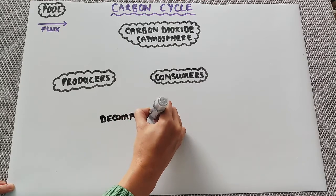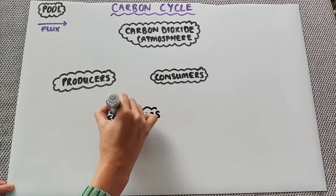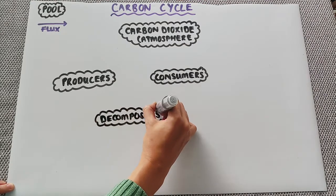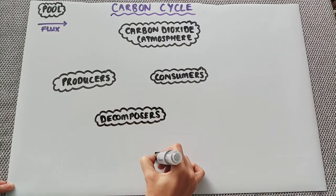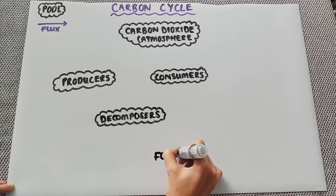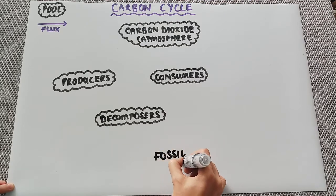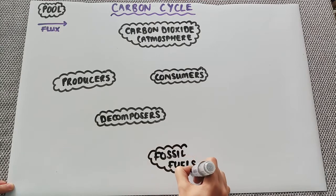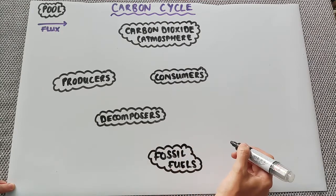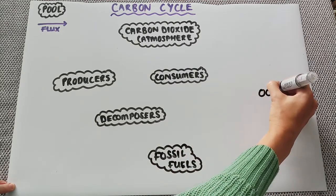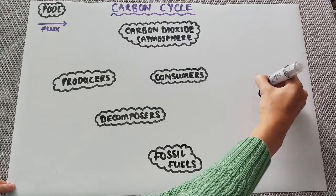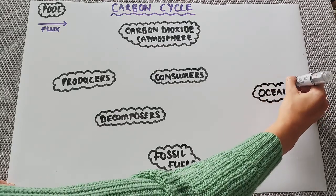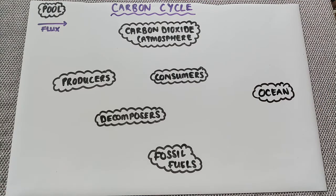And although these are all living organisms these all have a storage of carbon within them. We also have fossil fuels and we have the ocean. So these are our main pools of carbon within the carbon cycle.